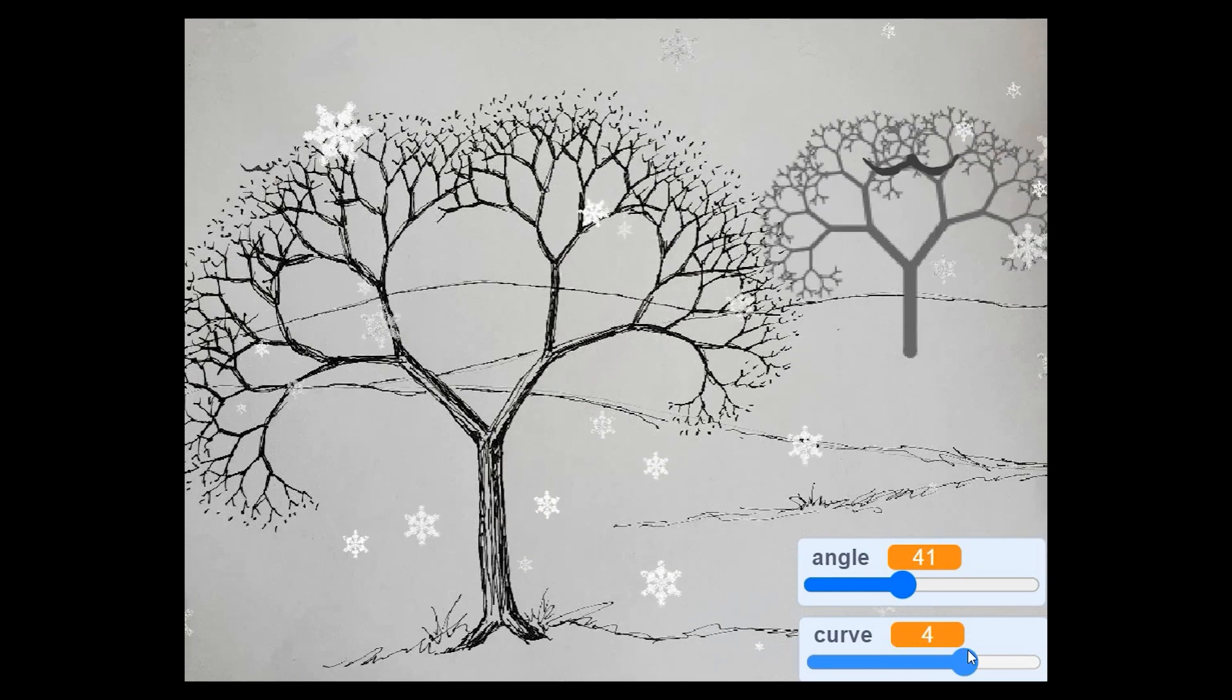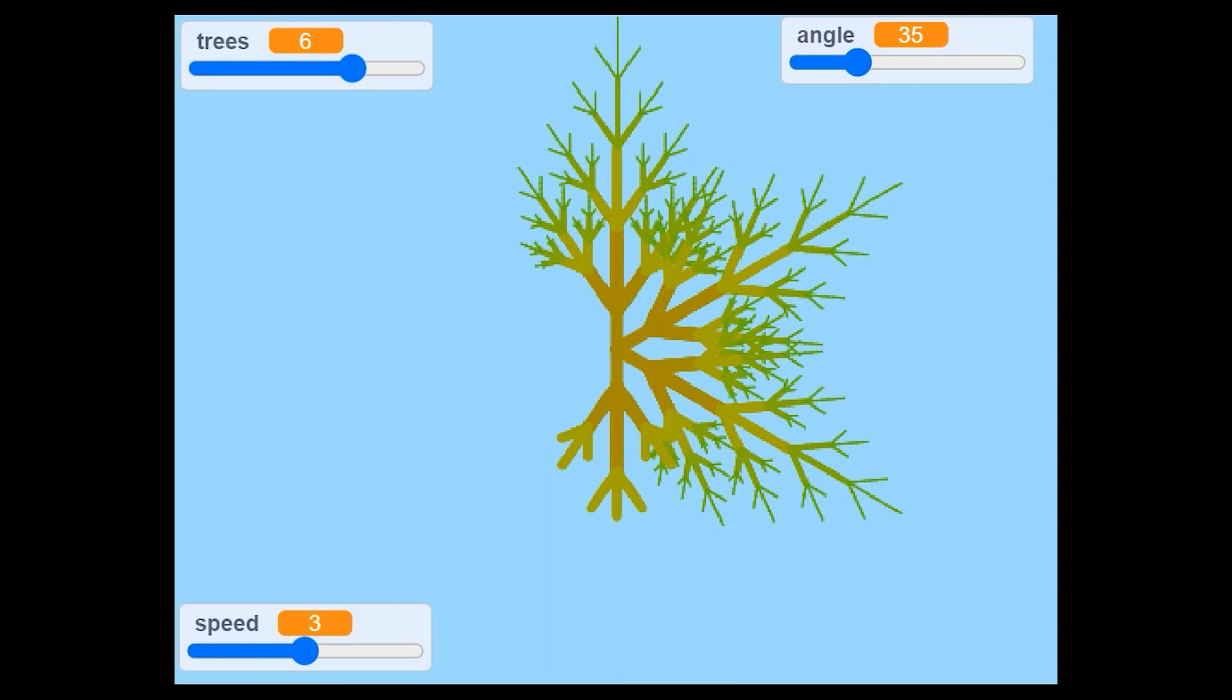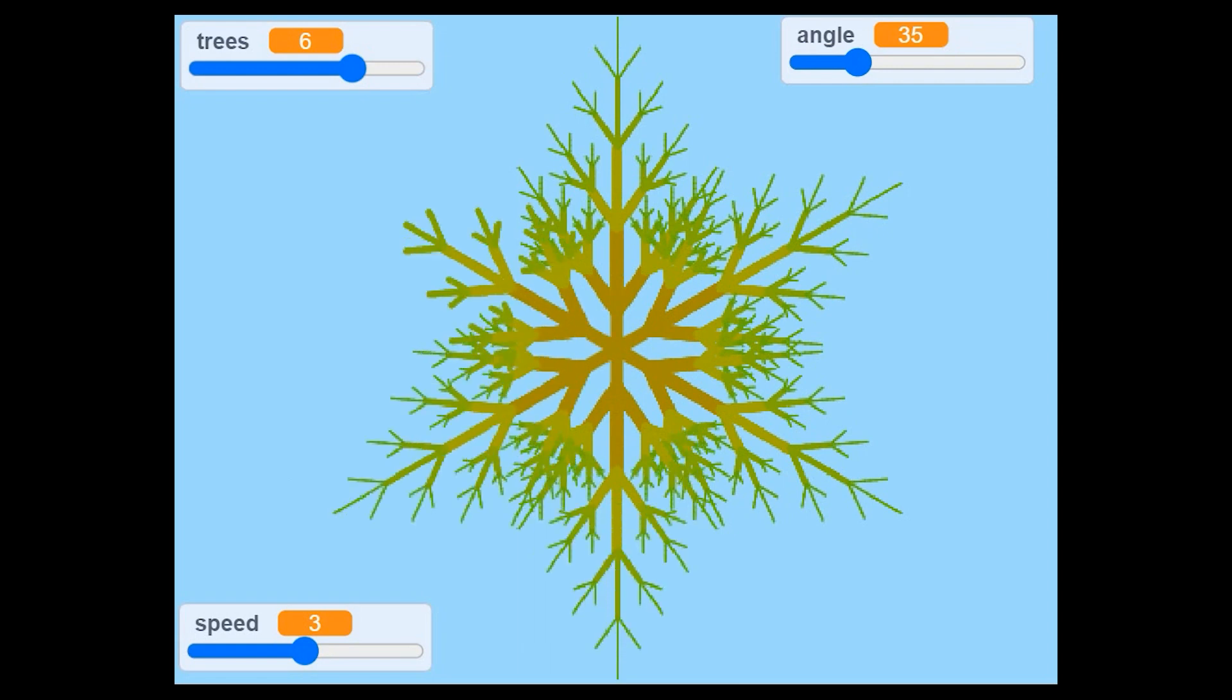Now snowflakes themselves are little fractals. If you just take the branching structure of trees and repeat it around in a circle, six of them, you have a hexagonal plant-like structure which looks like a snowflake if you add the right colors.